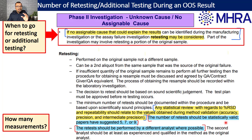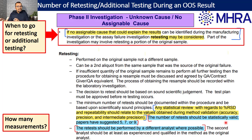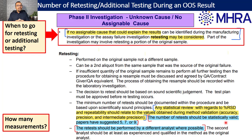The guidance says the number of retests should be statistically valid. This statistically valid term is important and gives flexibility on number of preparations. Statistical validity can be assessed based on your validation data. You must have conducted repeatability or intermediate precision during validation, with parameters like standard deviation or percent RSD. The number of preparations made during repeatability can be your starting point for discussing the number of preparations.